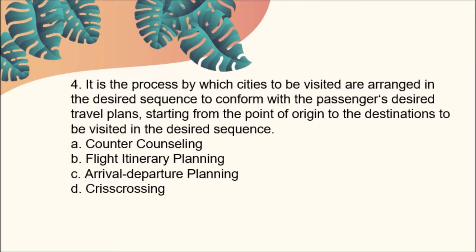Number four: It is the process by which cities to be visited are arranged in the desired sequence, conforming with the passenger's desired travel plans, starting from the point of origin to the destinations to be visited in the desired sequence. A, counter counseling; B, flight itinerary planning; C, arrival departure planning; D, crisscrossing sign. The answer is Letter B, flight itinerary planning.